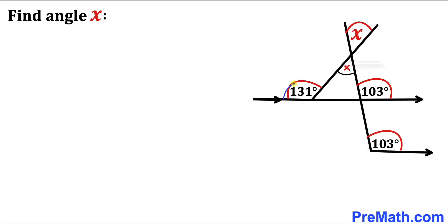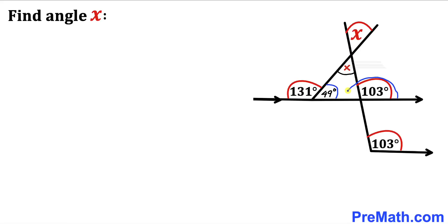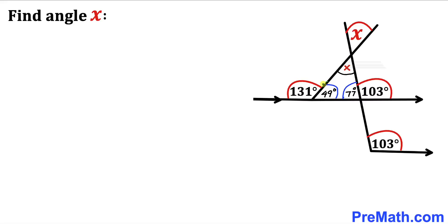Let's focus on this whole straight angle from here to here — it is 180 degrees. So therefore this angle has got to be 180 degrees minus 131 degrees, which gives us 49 degrees. Likewise, let's focus on this straight angle from here to here — it is 180 degrees. So therefore this angle has got to be 180 degrees minus 103 degrees, which gives us 77 degrees. So these two angles turn out to be 49 degrees and 77 degrees.